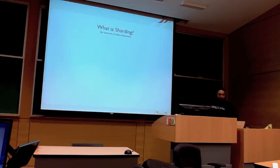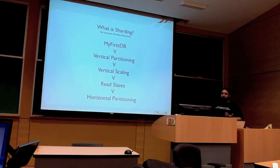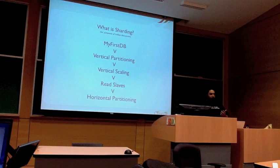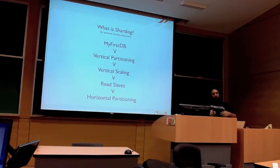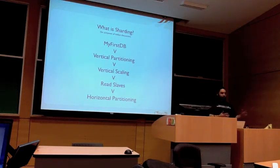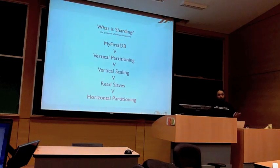I've done other talks on scalability patterns where I walk you through the steps that most applications go through. You start out with a simple database. You might do vertical partitioning, which is the built-in partitioning you get with Postgres. Then you'll do vertical scaling, where you're buying bigger and bigger boxes. Then usually that breaks out into read slaves where you're pushing data out. But for what we're talking about here, it's really just the last step — horizontal partitioning.